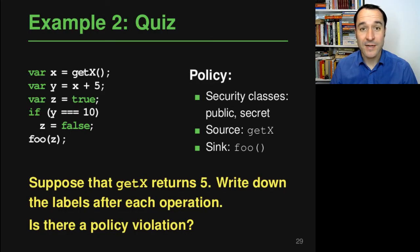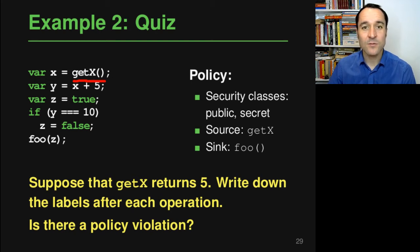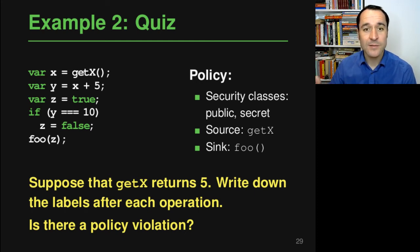The second example is a quiz for you to solve. We again have a piece of code with two security classes: public and secret. The source is the return value of the method get_x, and the sink is the parameters given to the method foo. In this execution, suppose get_x returns the value 5. Write down the labels of all relevant variables after each operation and determine whether there is a policy violation.